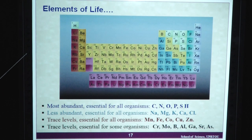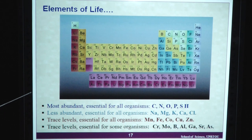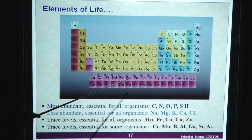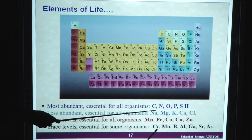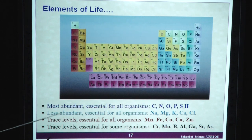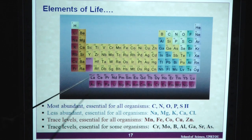We have different types of elements — elements of life. All elements are arranged under the periodic table. The most abundant and essential elements for all organisms are carbon, nitrogen, oxygen, phosphorus, sulfur and hydrogen. Less abundant but essential for all organisms are sodium, magnesium, potassium, calcium and chlorine. Trace-level elements essential for all organisms include manganese, iron, cobalt, copper and zinc. Trace-level elements essential for some organisms include chromium, molybdenum, boron, vanadium, gallium, strontium and arsenic.